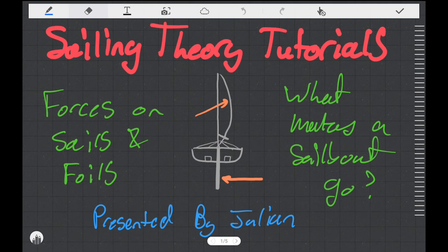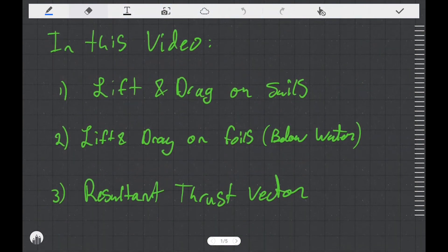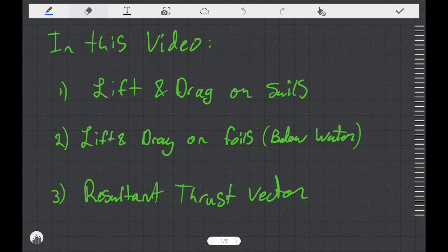This concludes my sailing theory tutorial on forces on sails and foils — what makes a sailboat go. In this video, we looked again at lift and drag on sails, and for the first time at lift and drag forces on a sailboat below the waterline. We looked at the resultant thrust vector when you add the lift and drag from both sails and foils together, and used the direction of the effort force and the required size of the resistance force to determine how much leeway a boat will experience on different points of sail. In conclusion, a boat on a higher point of sail will experience more leeway than one on a lower point of sail. Thank you for watching.